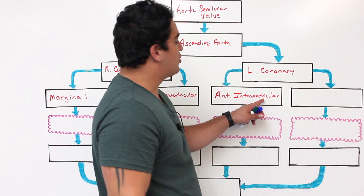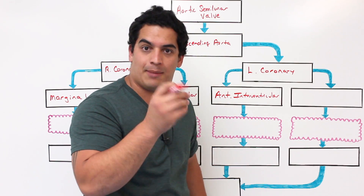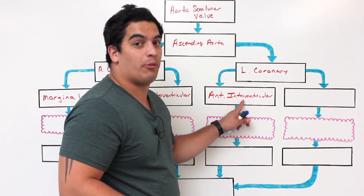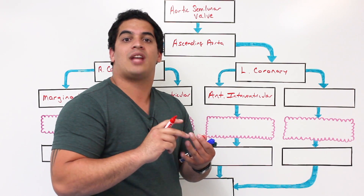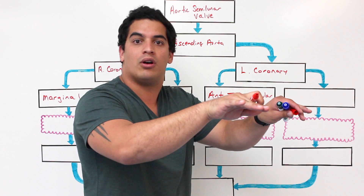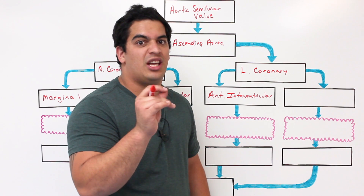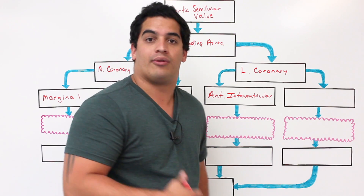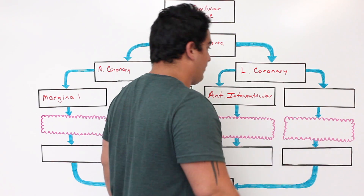The anterior interventricular artery is probably one of the most important arteries because it is one of the most common arteries to get occluded by atherosclerotic plaques. This artery is also referred to as the Widowmaker. If a clot or some type of atherosclerotic plaque develops there, it can occlude blood flow to the surrounding myocardium, leading to ischemia. If the ischemia persists, the tissue can become necrotic and die, leading to a myocardial infarction — a very severe MI.